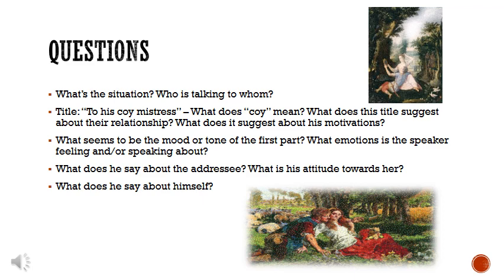If she's being coy, why might he be writing to her? What is he trying to get her to do? Maybe he hopes she won't be so coy — that rather than being flirtatiously shy, she'll lose the shy part and respond to his advances. What does it suggest about his motivations? Perhaps they are romantic or sexual in nature. What seems to be the mood or tone of the first part? It talks a lot about love — that seems to be the primary emotion expressed. What kind of mood does that create, the emotion with which he's delivering these words?